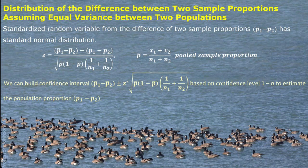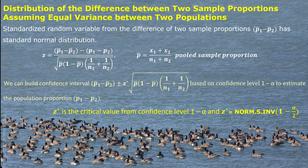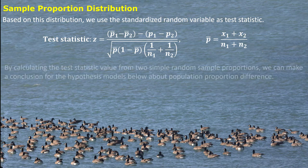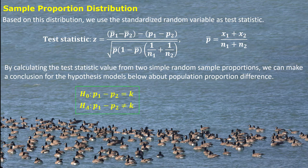Then we can build up confidence intervals based on that sampling distribution. It has a similar structure, and we can easily find the z critical value using the standard normal distribution function in Excel. The standardized sample proportion difference can also be used as a test statistic. By calculating this test statistic value from two simple random sample proportions, we can make a conclusion for the hypothesis about population proportion difference — either two-sided or one-sided.